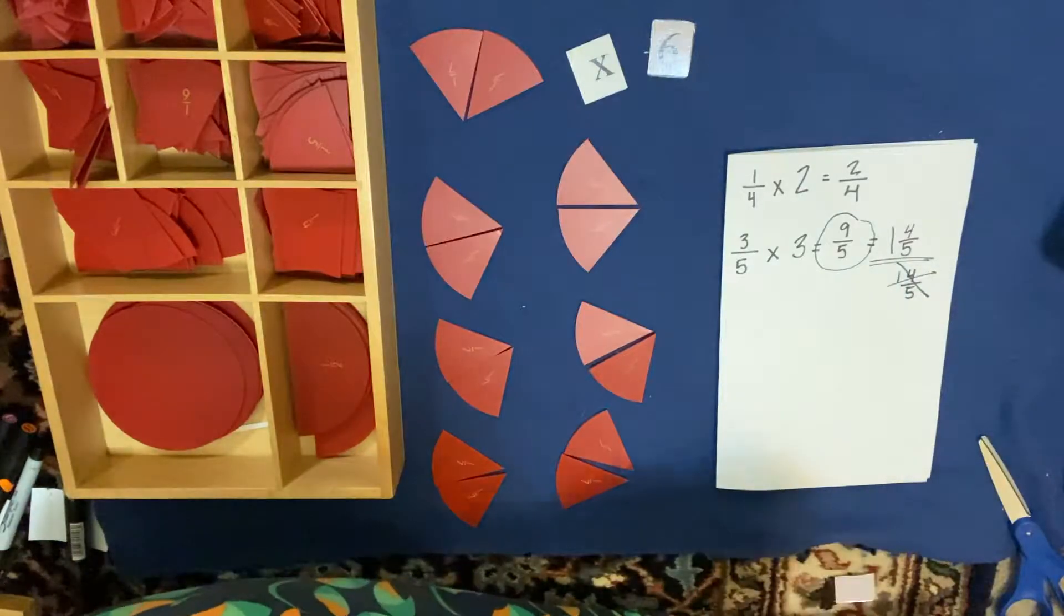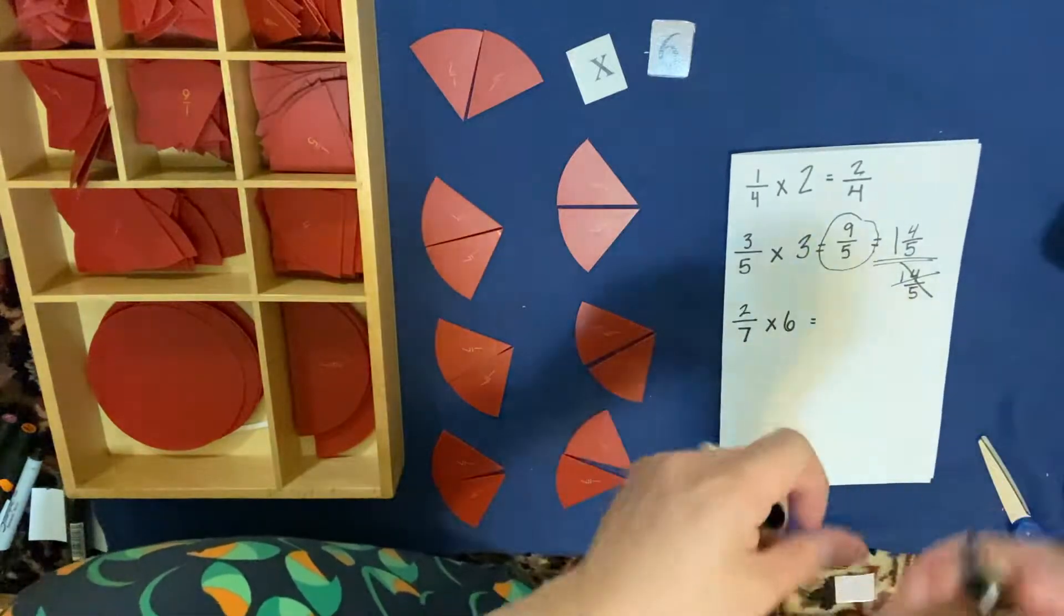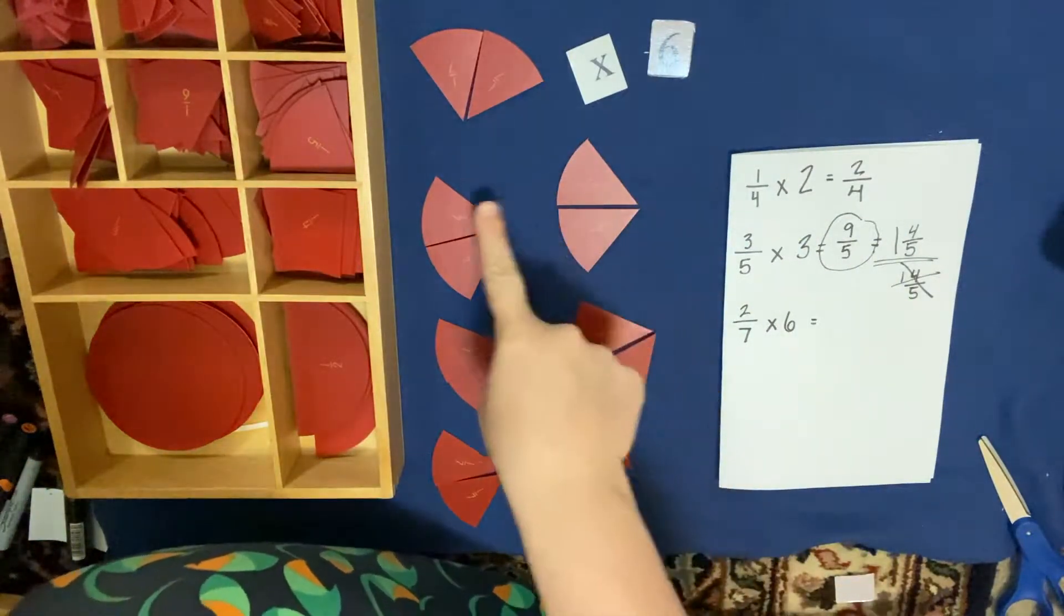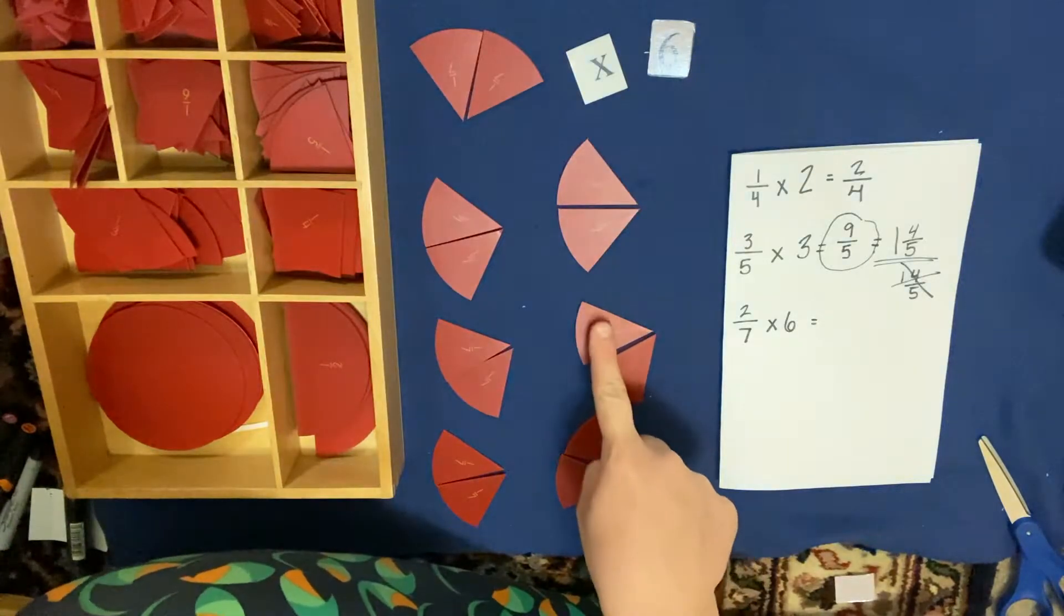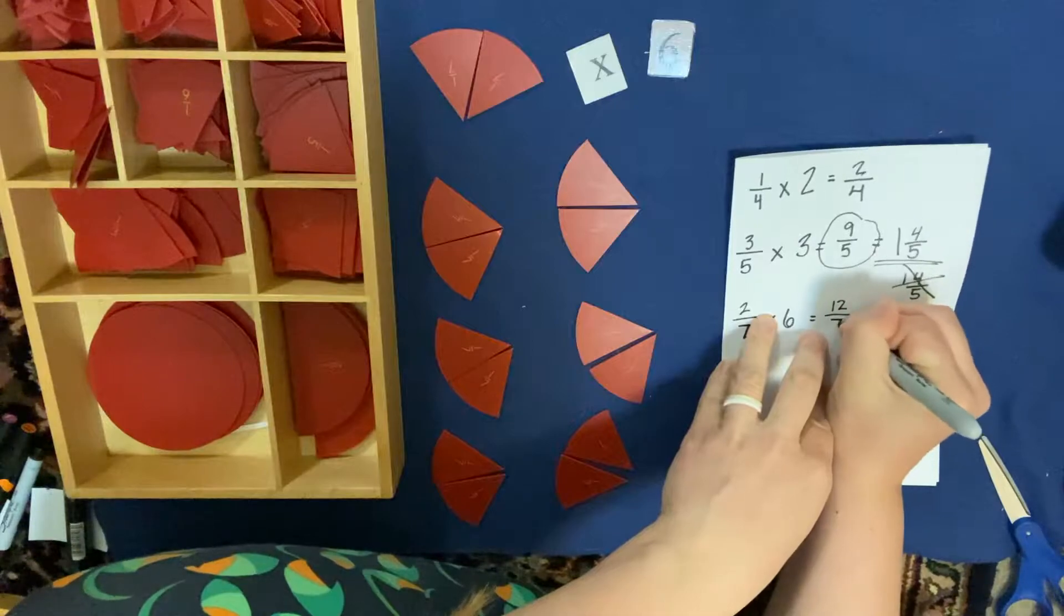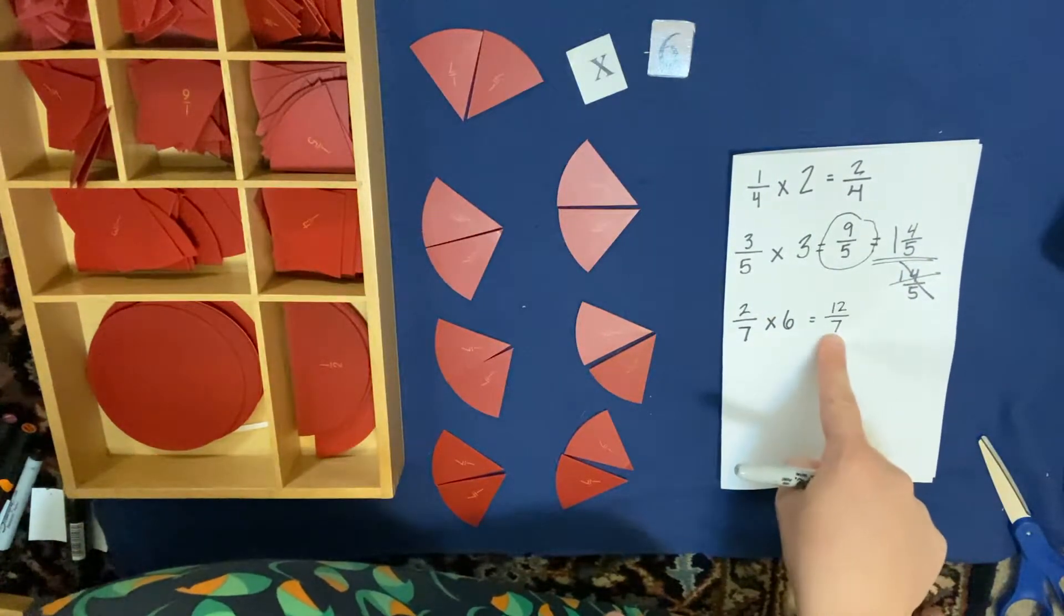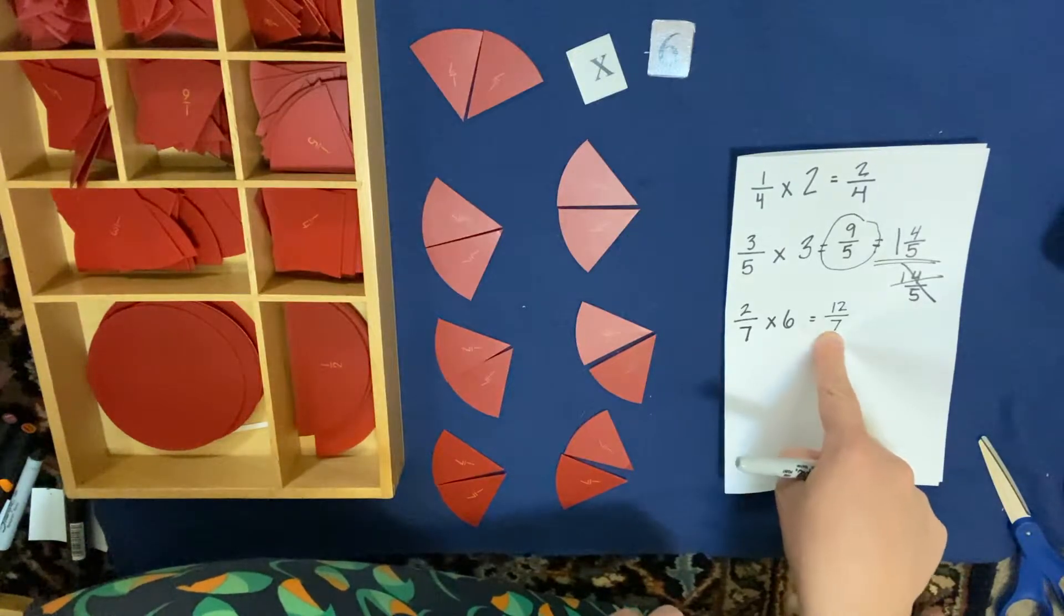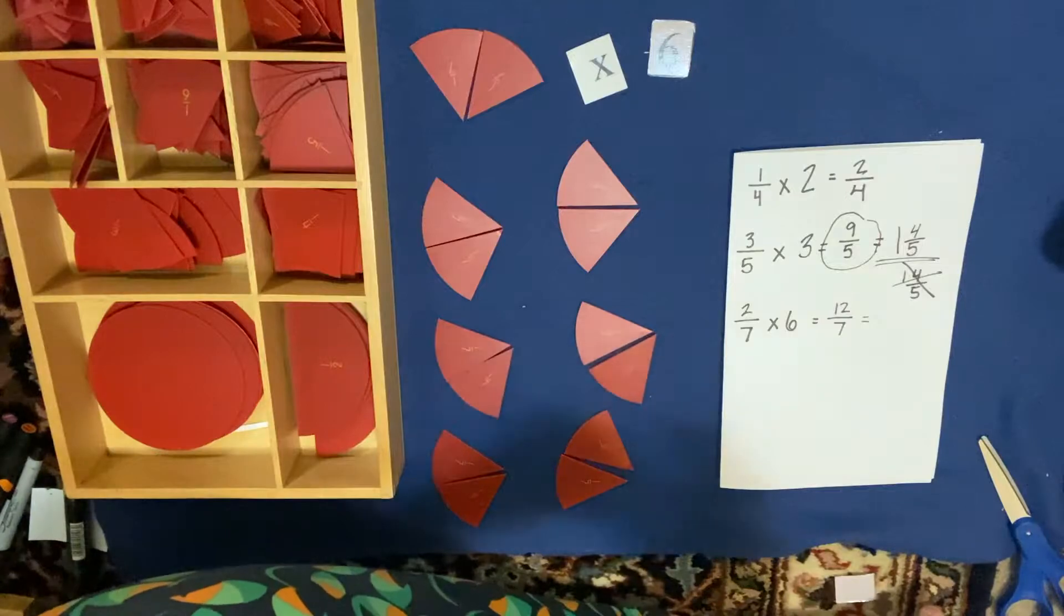Let me write down my problem here. We have 2/7 times 6. So let's take a look. 1, 2, 3, 4, 5, 6, 7, 8, 9, 10, 11, 12. So we have 12/7. So here we have another fraction where the numerator is bigger than the denominator. So we have an improper fraction. So I want to turn this into a mixed number.